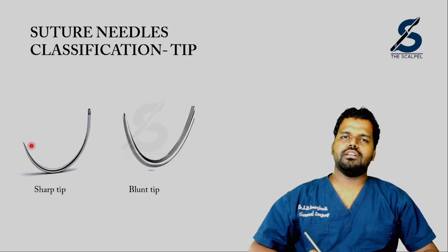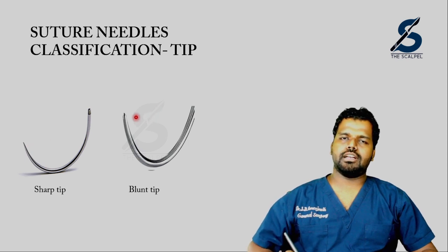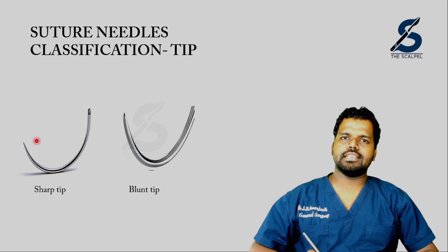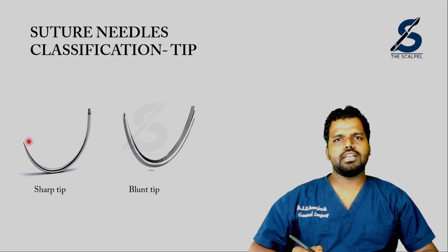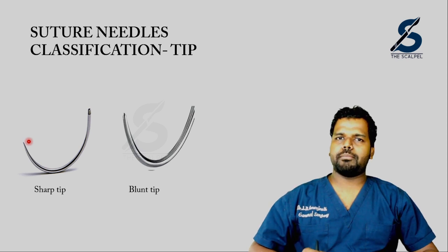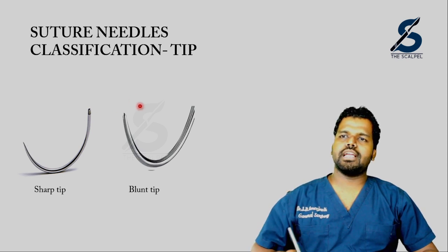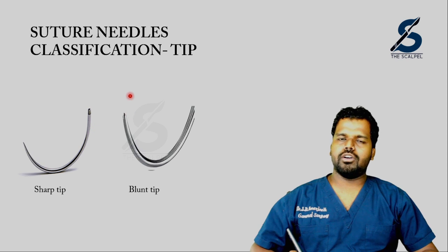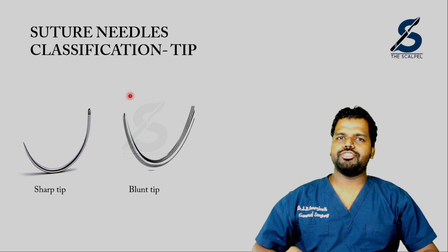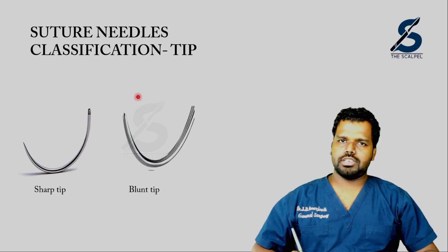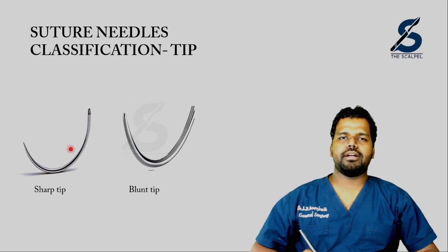Most of the time you will use a suture needle with a sharp tip, but there are scenarios where a blunt tip needle is preferred. For example, when closing a laparotomy wound and taking bites through the linea alba or rectus sheath, a blunt tip suture needle is preferred because the chance of injuring the bowel beneath the linea alba is much less compared to a sharp tip needle.